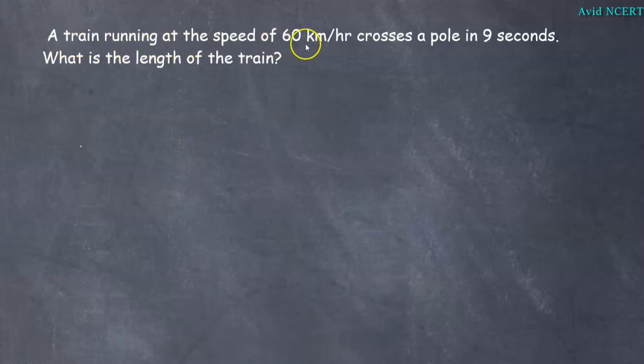A train running at the speed of 60 kilometers per hour crosses a pole in 9 seconds. What is the length of the train?